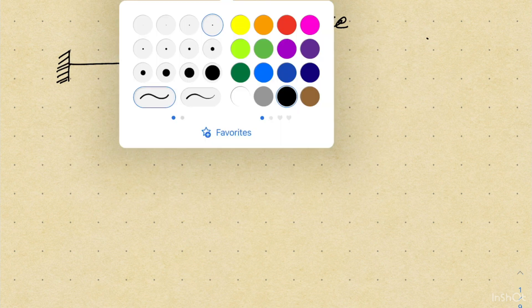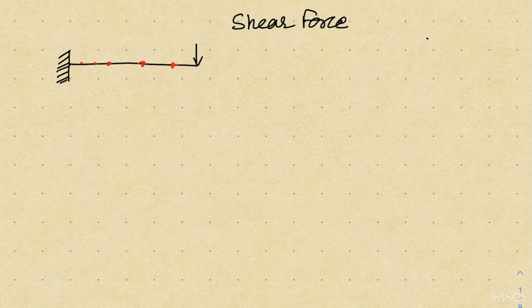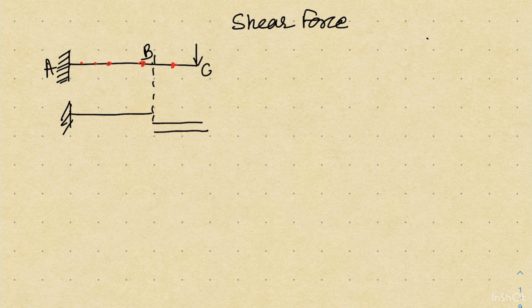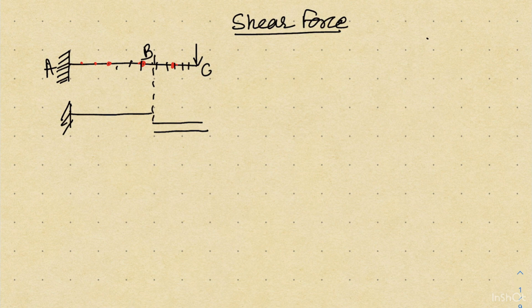If I am having a load, there is a possibility that because of this load the beam can shear at any section. The shearing effect means the beam may have a shearing failure at that point. Say this is A, this is B, and this is C — because of this loading, there is a possibility that the section BC and section AB will have a shearing kind of effect. We are trying to see that at different sections, what will be the value of this shear force.